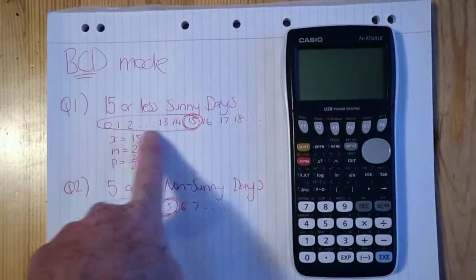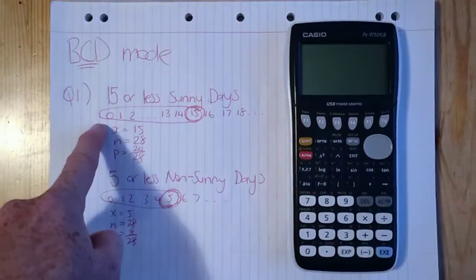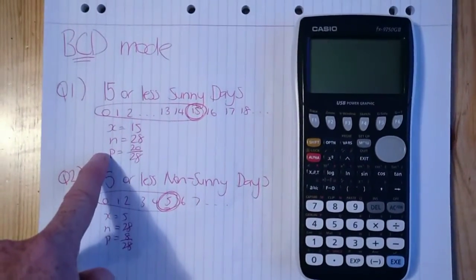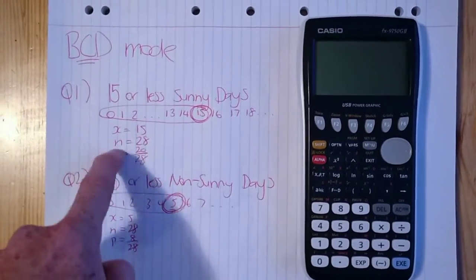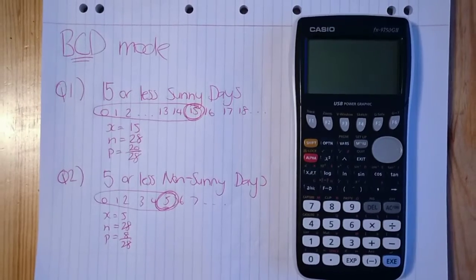So we've circled that and 15 is the highest number in that range. That means x is 15, n is 28 because there are 28 days in February, and the probability of the day being sunny per the video is 20 divided by 28. So let's get into how to do that in the calculator.